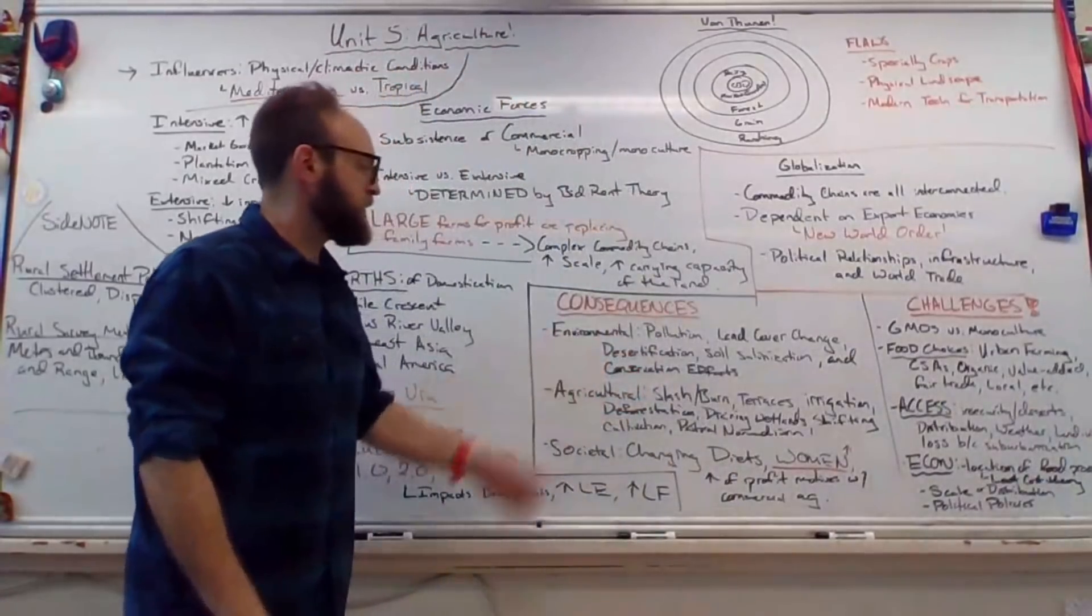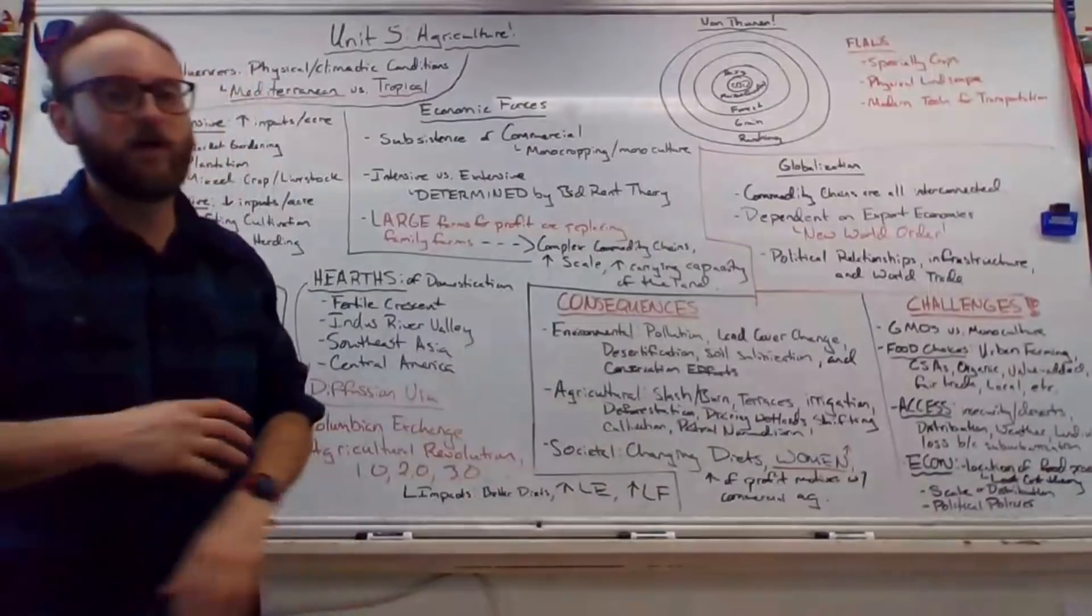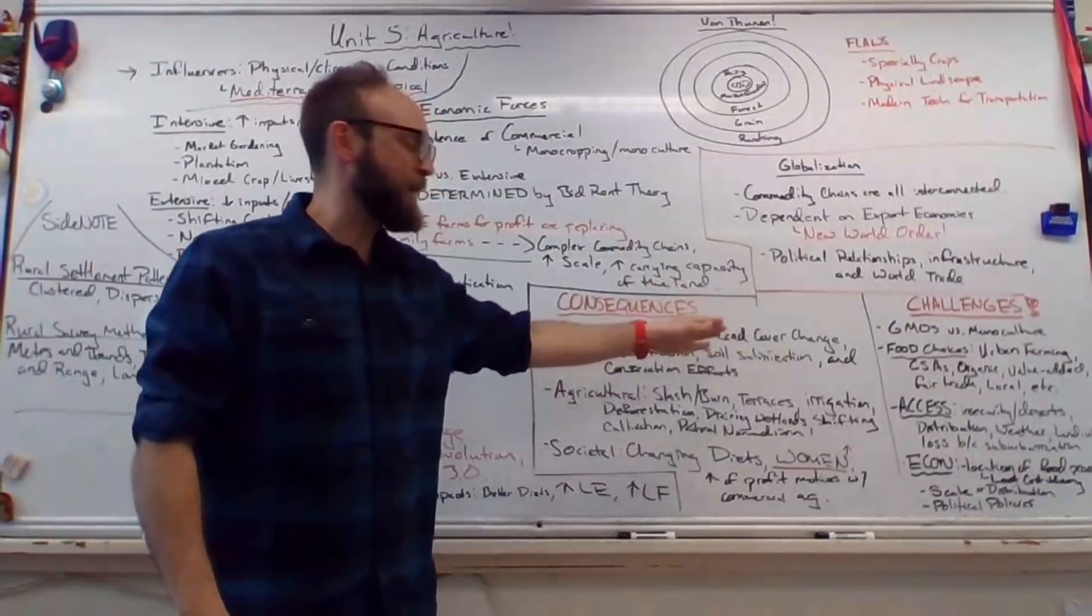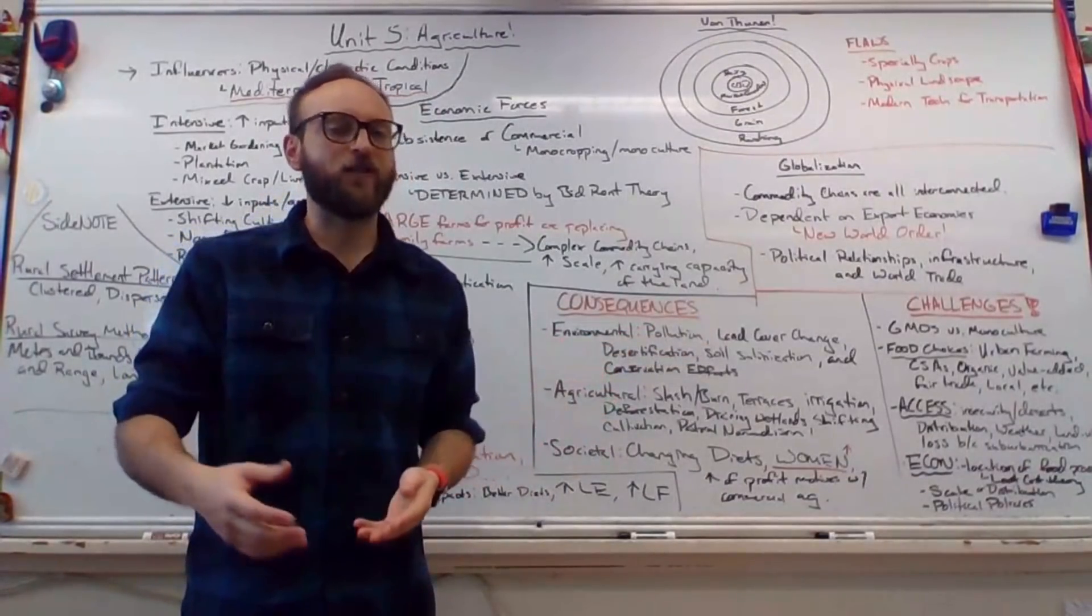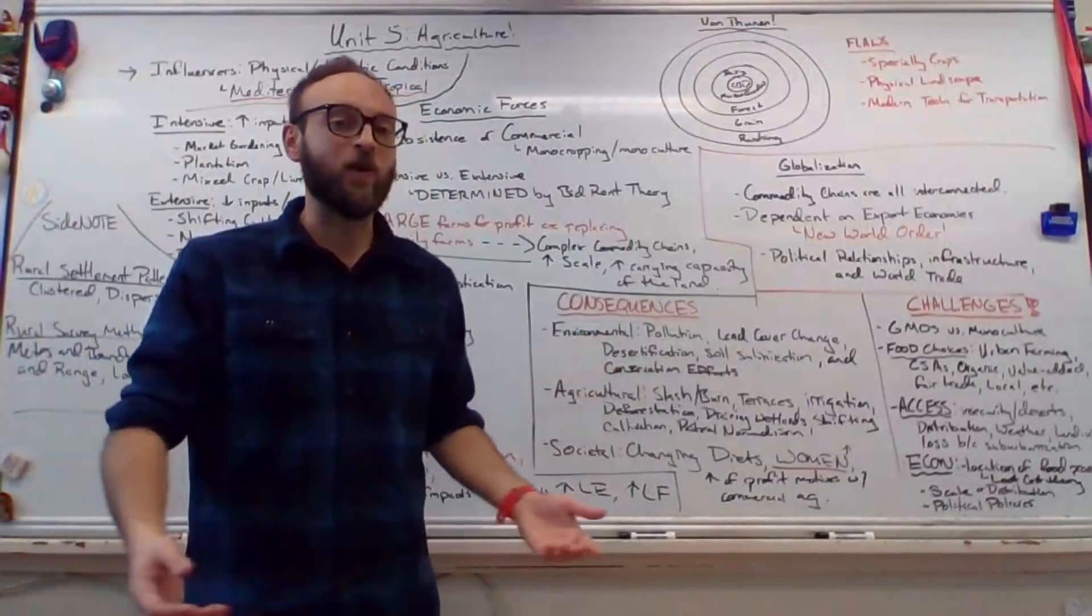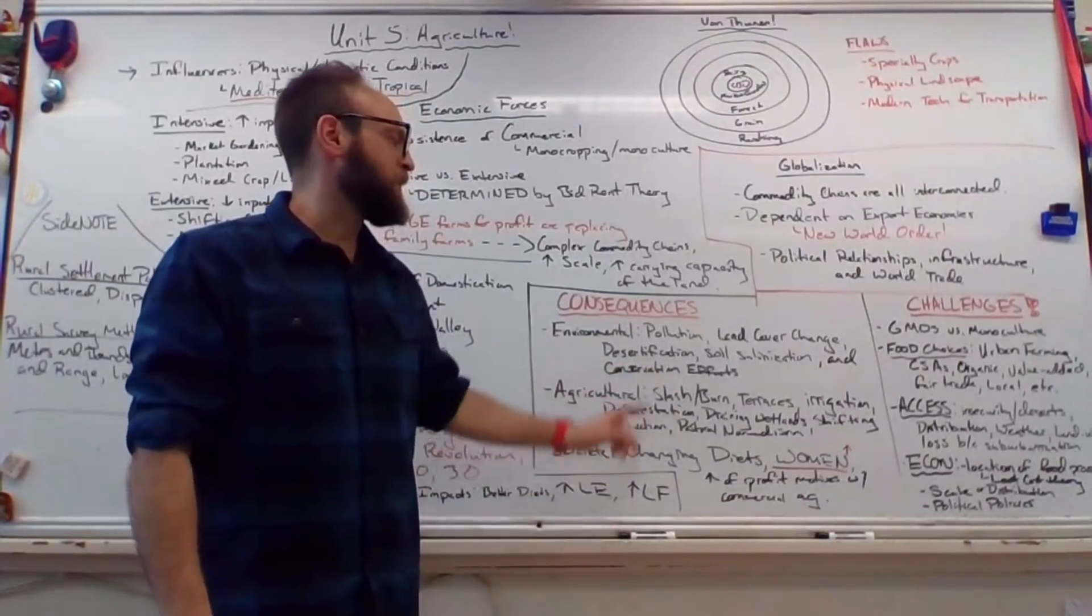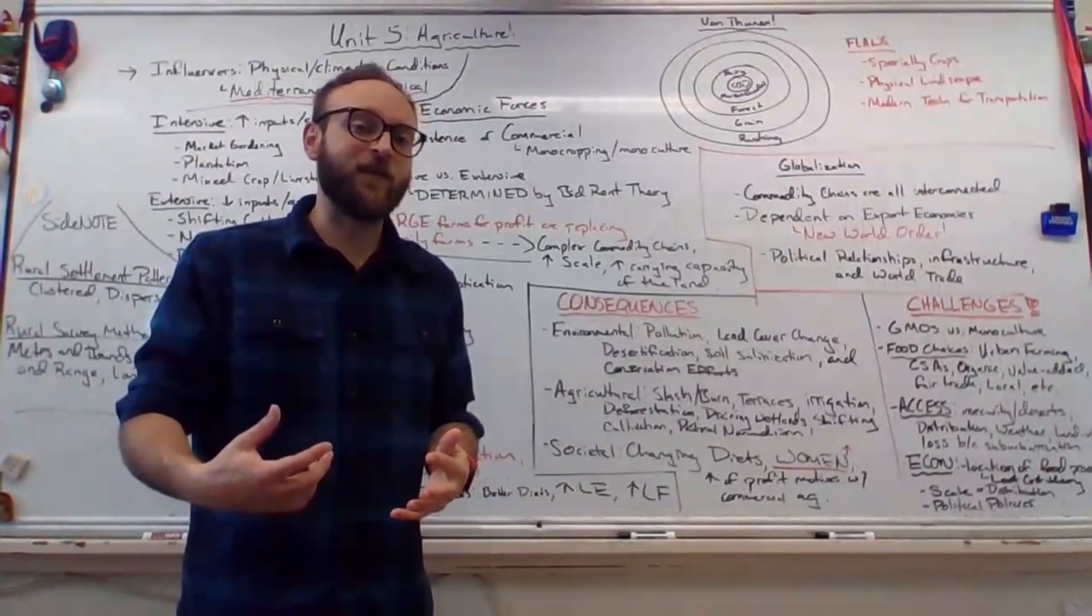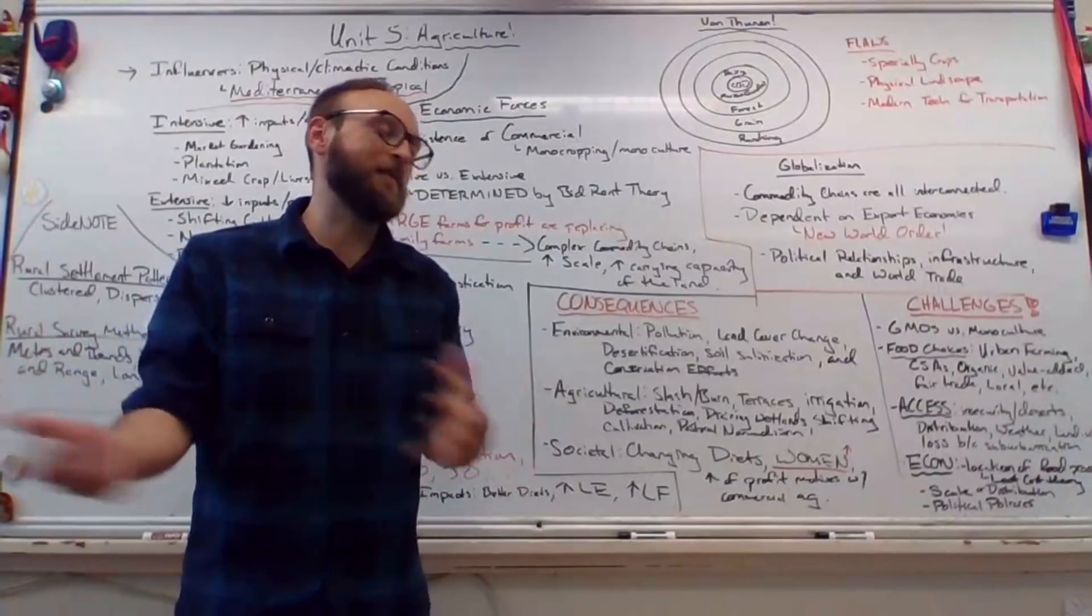Some consequences of this whole deal. There are three ways to break this down. Environmental, which would be pollution, land cover change, meaning we're using the land differently. Desertification, the expansion of deserts. Soil salinization, that means more salt in the soil, most likely because of desertification or we're literally using too much water. And conservation efforts. By the way, salinization occurs for a lot of different reasons. And effectively, the more we're using the land, the more likely we're removing nutrients and affecting climate patterns.